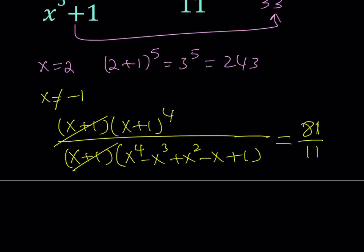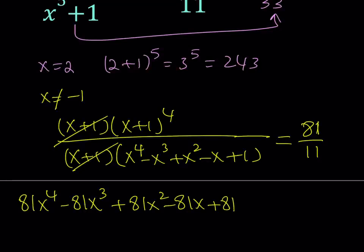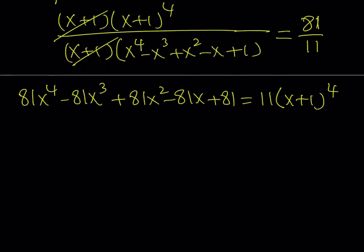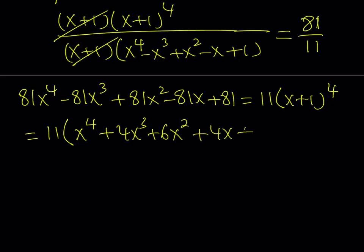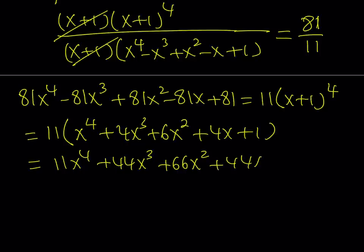We do get a quartic equation from here. Let's go ahead and cross multiply: 81x⁴ minus 81x³ plus 81x² minus 81x plus 81 — everything is 81. The other side is 11 times (x+1)⁴. Expanding (x+1)⁴ with coefficients from the binomial theorem: x⁴ plus 4x³ plus 6x² plus 4x plus 1. So the right side becomes 11x⁴ plus 44x³ plus 66x² plus 44x plus 11.